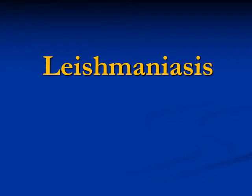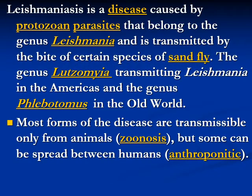We will start with leishmaniasis. Leishmaniasis is a disease caused by protozoan parasites of the genus Leishmania, transmitted by the bite of the sandfly. It is transmitted by the genus Lutzomyia in the Americas, and by the genus Phlebotomus in the Old World. Most forms of disease are transmissible only from animals — zoonoses.